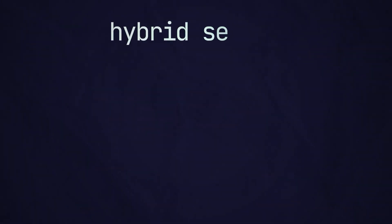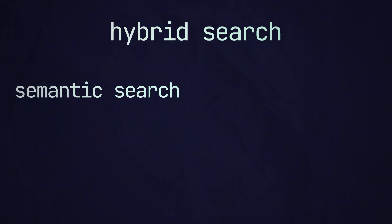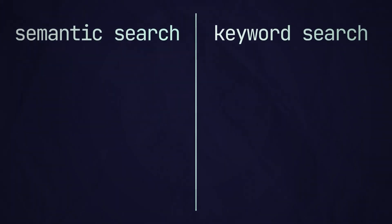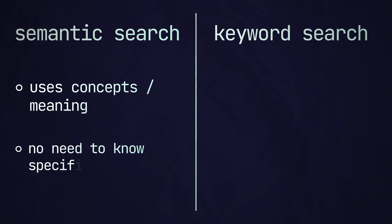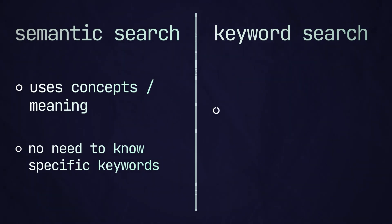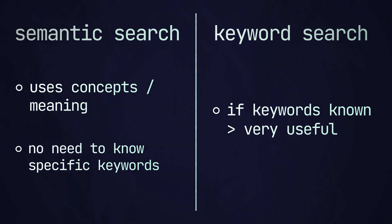Today we're going to have a look at how we can perform a hybrid search in Pinecone. A hybrid search is where we perform a semantic search and also a keyword search. Semantic search is an incredibly useful tool that allows us to search based on meaning or concepts rather than relying on specific keywords, but sometimes a more traditional keyword search can be quite useful, particularly if you know what keywords appear in the documents you're searching for.